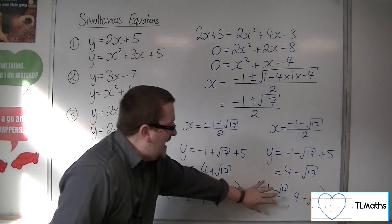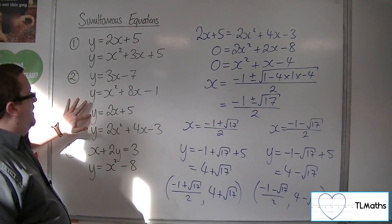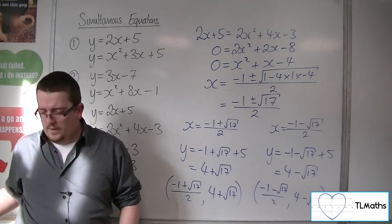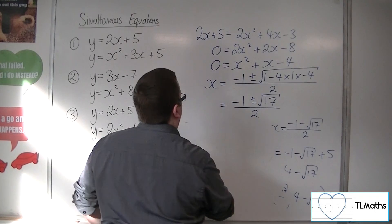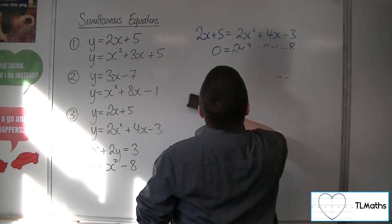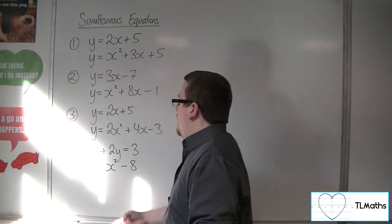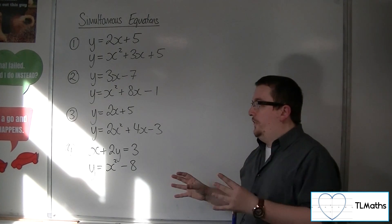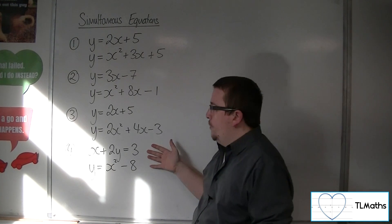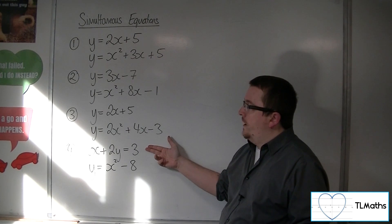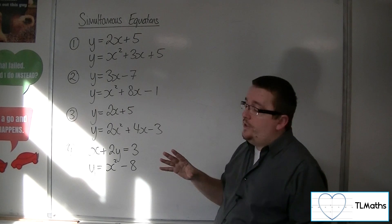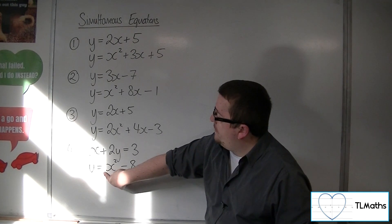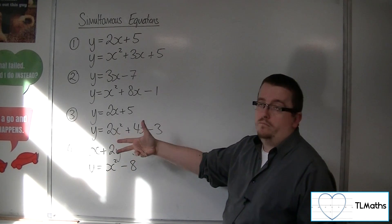Those are the exact coordinates of where this line crosses this curve. Let's look at number 4: we have x plus 2y equals 3, and y equals x squared minus 8. This time, the linear equation isn't written as y equals mx plus c. I could rearrange it, or substitute y equals x squared minus 8 directly into it.